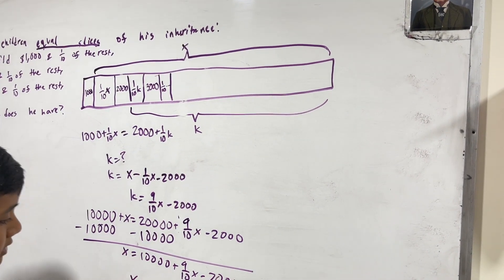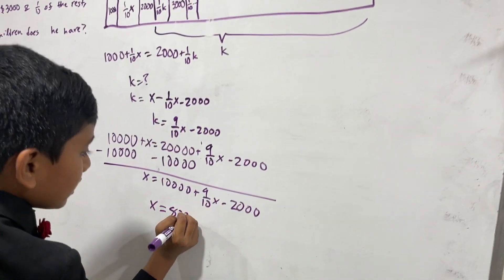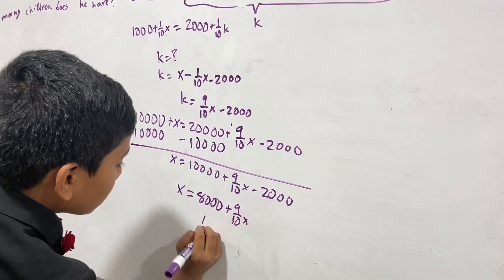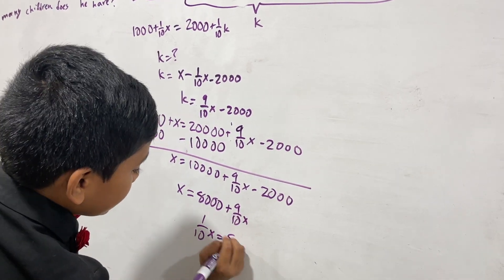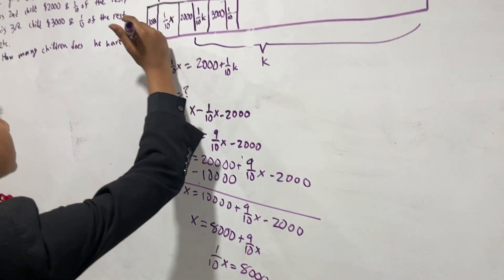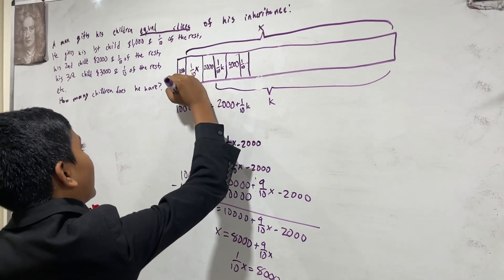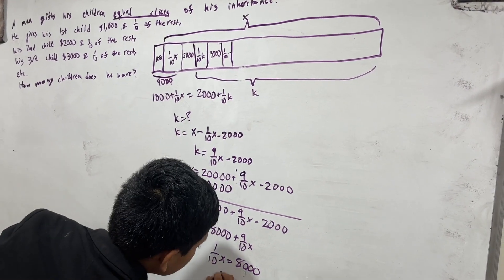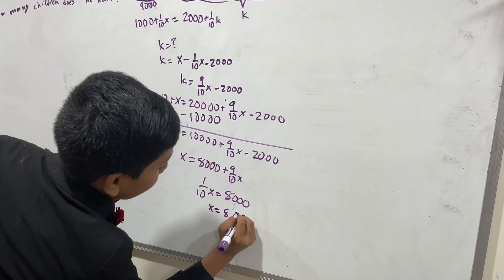Now, that means that X is equal to eight thousand plus nine tenths X, which means one tenth of X is eight thousand. And that means that the first child got nine thousand. And X overall is equal to eighty thousand.